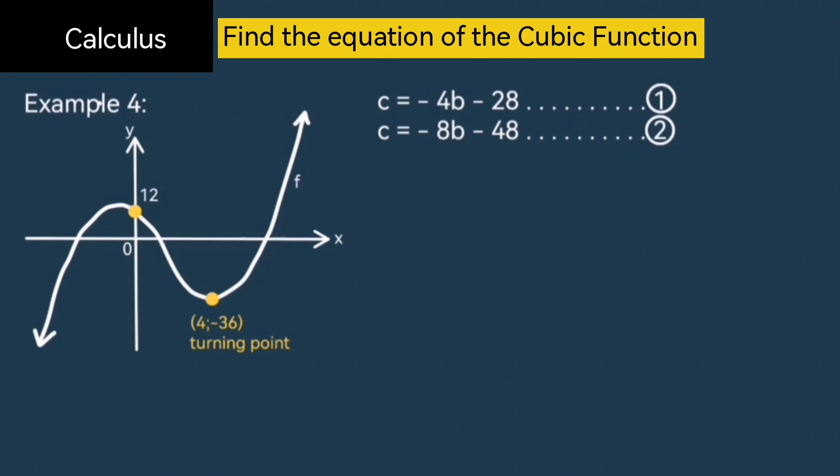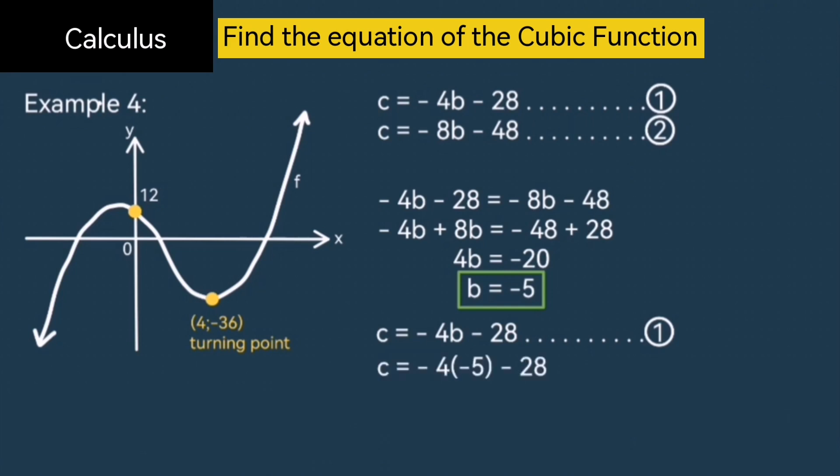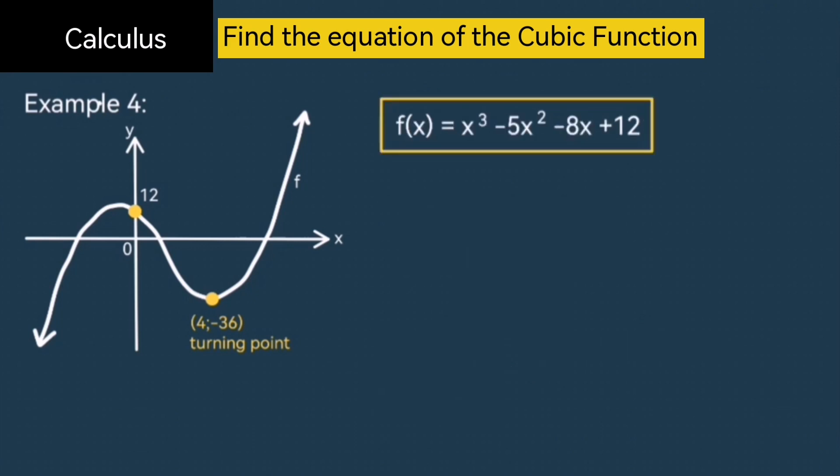Now we can do simultaneous equations by equating the two equations for c. Now grouping your like terms, you get negative 4b plus 8b equal to negative 48 plus 28. This gives us 4b equal to negative 20 and b is equal to negative 5. Now that you have b, make sure to substitute back into one of the other equations. Doesn't matter which one, but I'll just go with equation number one. Substitute b with negative 5 and you'll calculate c as negative 8. So this is now the equation of the function: x cubed minus 5x squared minus 8x plus 12.